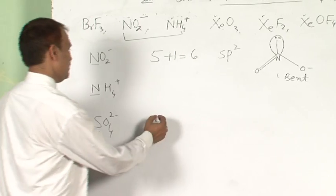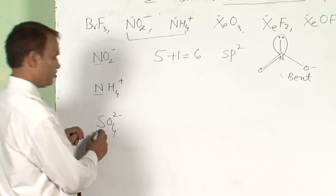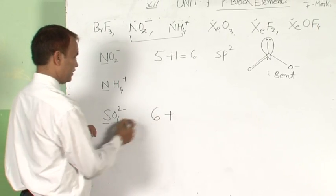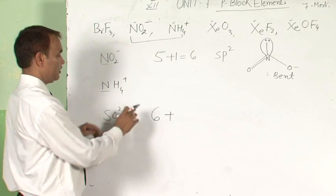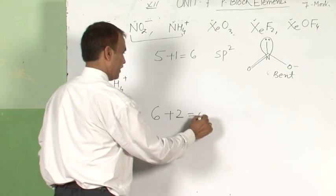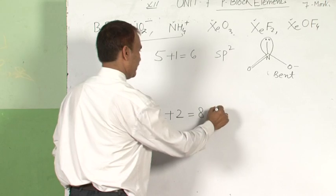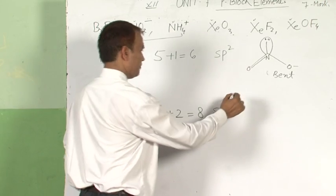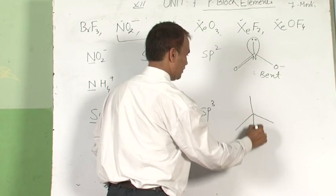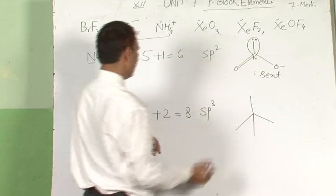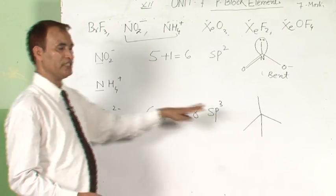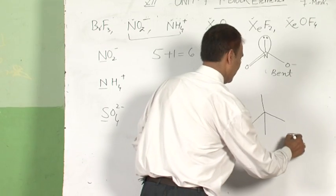Similarly, in the case of the sulfate ion, sulfur belongs to group 16, so 6 electrons. Oxygen is a bonding atom, so ignore it. There is a 2 negative charge, so add 2: 6 plus 2 is 8. 8 means sp3. sp3 means regular geometry tetrahedral. Then count the bonding atoms — there are 4 bonding atoms, so it is a regular tetrahedral shape.